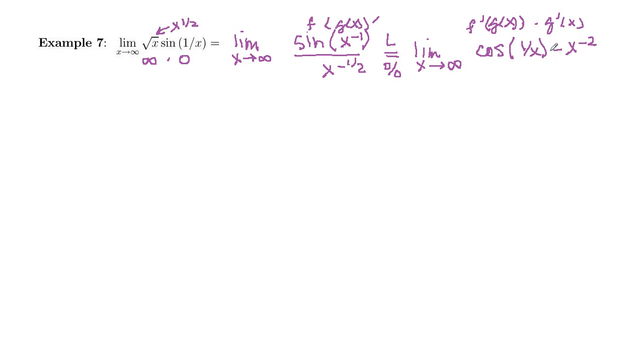And then in the denominator, negative 1 half comes down in front times x, and then decrease our exponent by 1. So negative 3 half power. And now we want to simplify this thing before we try and do any more with it.